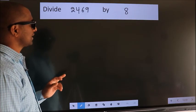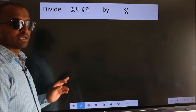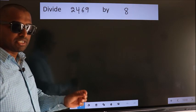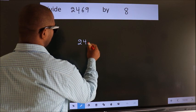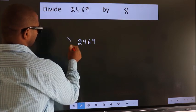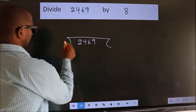Divide 2469 by 8. To do this division, we should frame it in this way. 2469 here, 8 here.